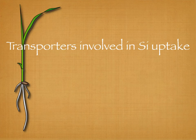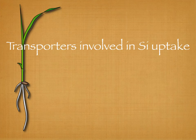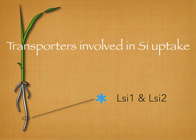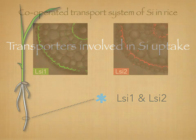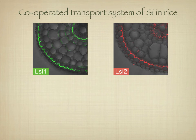Therefore, to benefit from silicon, a high accumulation of silicon is required. During the last decade, several transporters involved in silicon accumulation have been identified, mainly in rice. Two different kinds of transporters, LSI-1 and LSI-2, are involved in silicon uptake in rice roots.